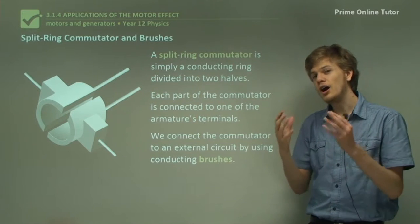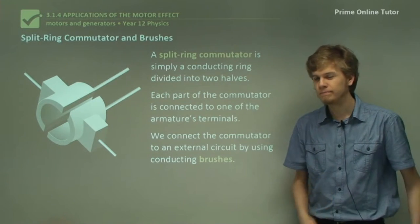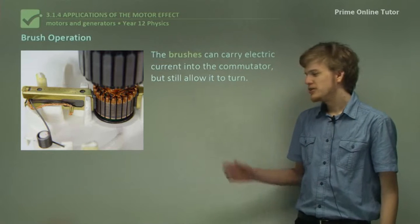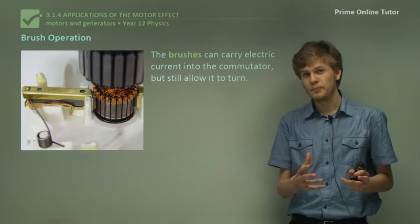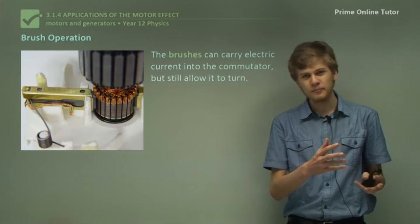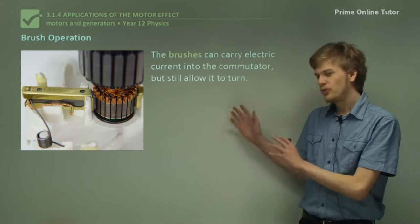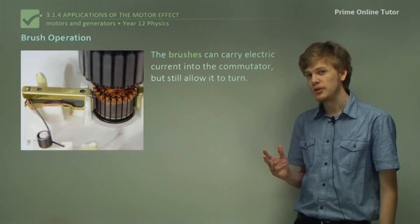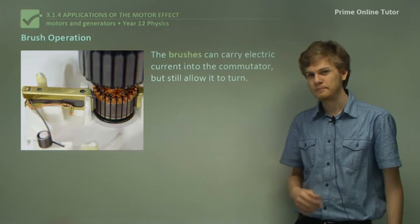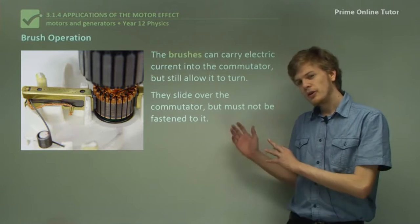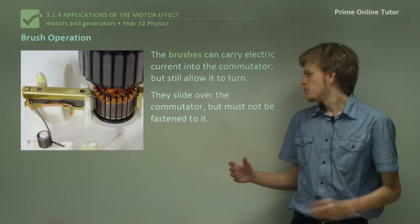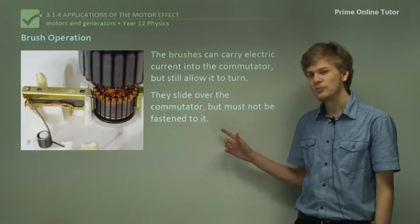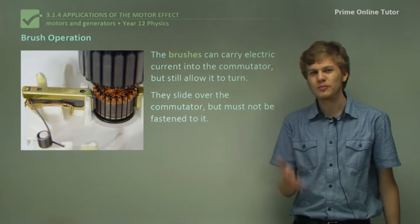We call these devices that connect the commutator to the external current brushes, because they brush against the surface of the commutator. The conducting brushes are able to carry current into the commutator so that electric current can flow through the brush and into the armature. Remember that the armature is the name we give to the coil that spins in the magnetic field. There are two brushes — one to the left of the set of coils and one to the right. The brushes are able to slide over the commutator but are not fastened to it. If they were fastened to the commutator, they'd get tangled up as the armature started to turn.